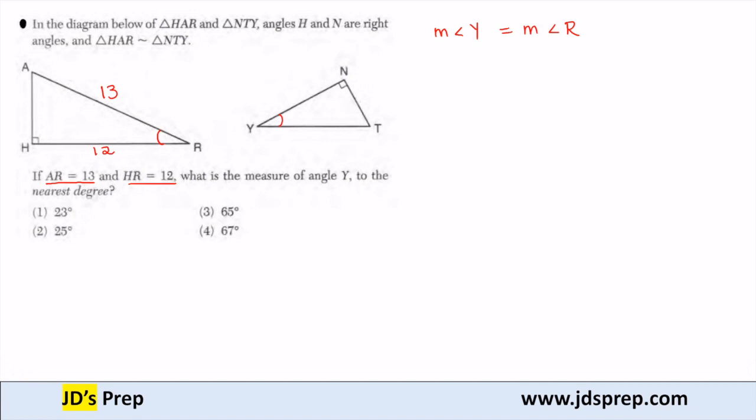Because these are right triangles, we can use our knowledge of SOHCAHTOA, which shows us a relationship between an angle and its sides, to figure out what that measure is.